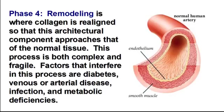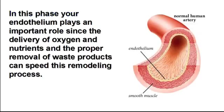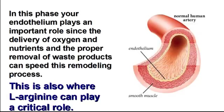Phase four, remodeling, is where collagen is realigned so that this architectural component approaches that of normal tissue. This process is both complex and fragile. Factors that interfere in this process are diabetes, venous and arterial disease, infection, and metabolic deficiencies. In this phase, your endothelium plays an important role, since the delivery of oxygen and nutrients and the proper removal of waste products can speed this remodeling process. This is also where L-arginine can play a critical role.